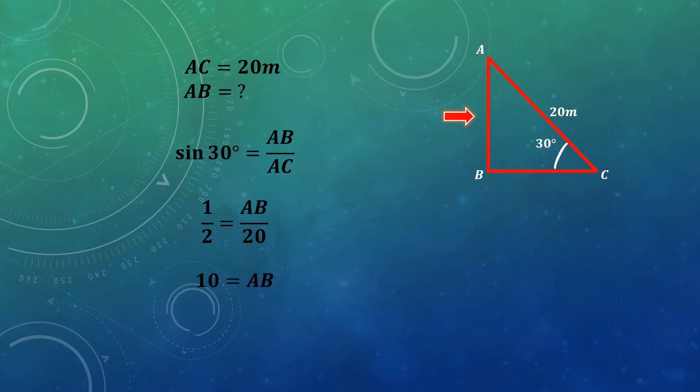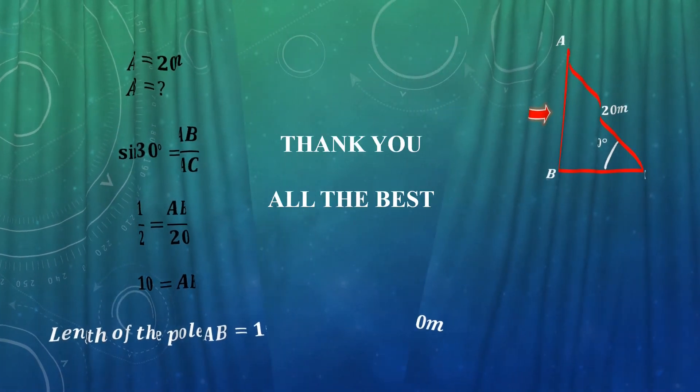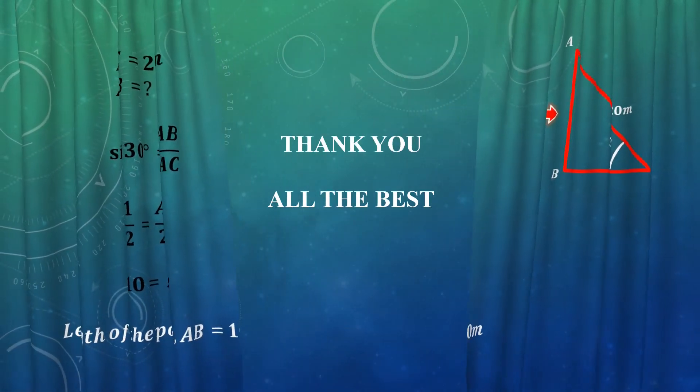I simply cross multiply and find that the value of AB is 10. So the length of the pole is 10 meters. I hope this question is clear to you. Thank you and all the very best.